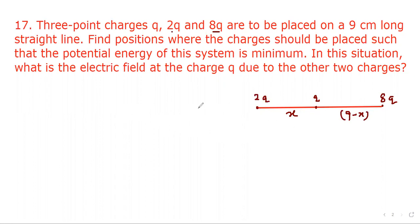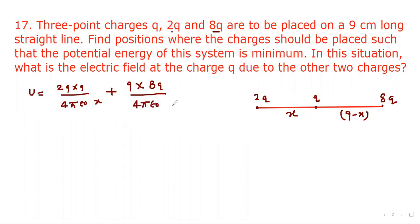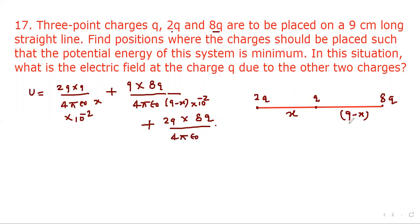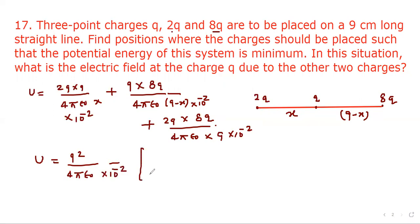The potential energy U equals 2q into q divided by 4 pi epsilon naught times x, plus q into 8q divided by 4 pi epsilon naught times (9 minus x), with distances in centimeters so 10 to the power minus 2, plus 2q into 8q divided by 4 pi epsilon naught times 9 into 10 to the power minus 2. We can factor out q squared divided by 4 pi epsilon naught into 10 to the power minus 2.